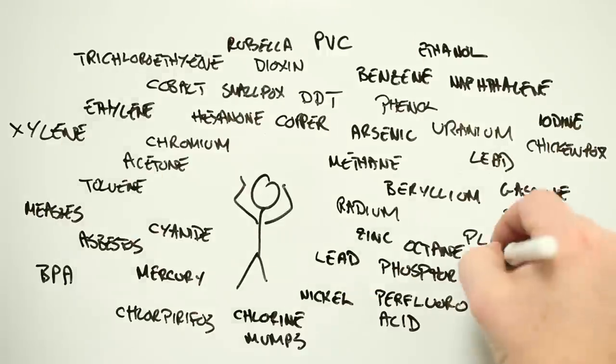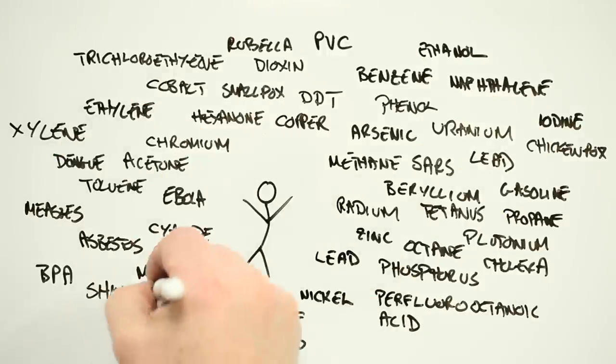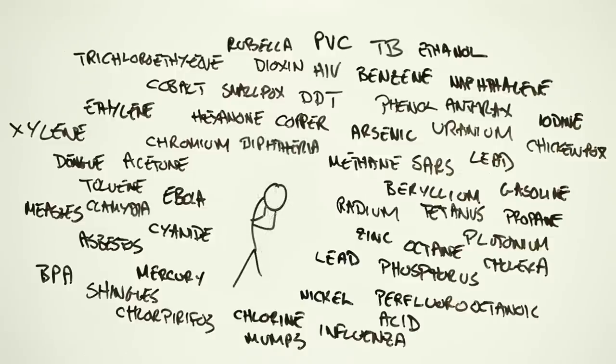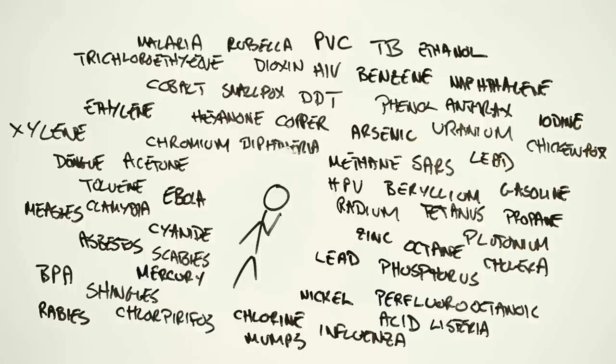There's measles, smallpox, chickenpox, rubella, mumps and cholera, Ebola, SARS and tetanus, dengue, shingles, influenza, anthrax, TB, diphtheria, chlamydia and rabies, scabies, HIV, dysentery, malaria.